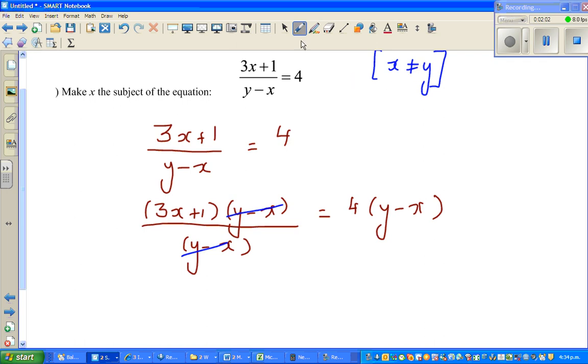The next step would look like this: 3x plus 1 equals - now we expand the bracket - 4 times y is 4y minus 4 times x is 4x.